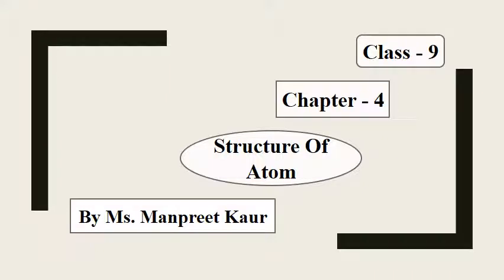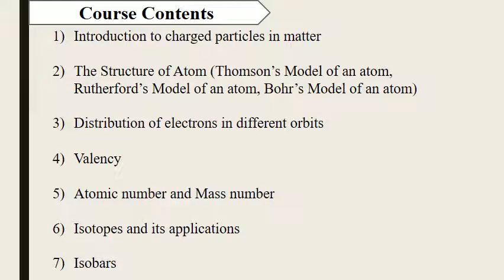Good morning students, today we are going to start chapter number four, Structure of Atom. In this chapter we are going to study about introduction to charged particles in matter, structure of atom, distribution of electrons in different orbits, valency, atomic number and mass number, isotopes and its applications, and isobars. In today's class we are just going to cover our first two topics.